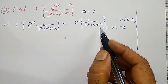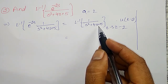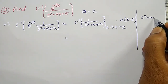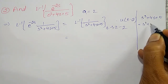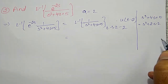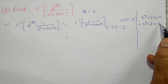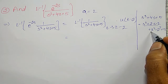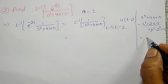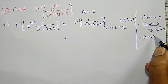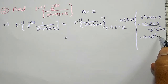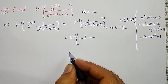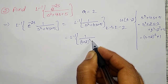To find the inverse Laplace Transform of 1 divided by s squared plus 4s plus 5 — no factors are possible, therefore completing the square. s squared plus 4s plus 5 equals s squared plus 2 times 2s plus 2 squared minus 2 squared plus 5, which gives s plus 2 the whole square plus 1, since minus 4 plus 5 equals plus 1. Therefore, the inverse Laplace Transform of 1 divided by (s plus 2) squared plus 1. This is the denominator I can write like this.